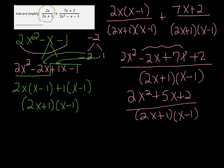Now we have to check to see if the numerator factors. 2 times 2 is 4. Are there factors of 4 that add up to 5? Yeah, 4 and 1.